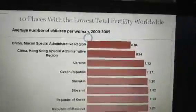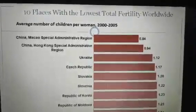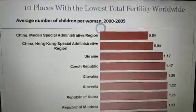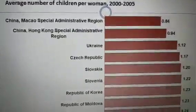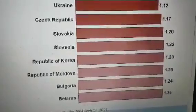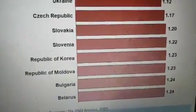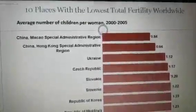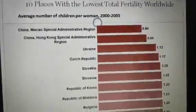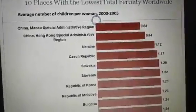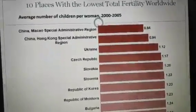There are 10 places with the lowest total fertility worldwide, even below replacement level — figures from 2005. China's Macau specialization region: 0.84; Hong Kong: 0.94; Ukraine: 1.12; Czech Republic: 1.17; Slovakia: 1.20; Slovenia: 1.22; Republic of Korea: 1.23; Moldova: 1.23; Bulgaria: 1.24; and Belarus: 1.24. All these countries have reached or gone below replacement level and are now witnessing low economic demand due to low population. This is a new challenge, and it is why a fifth stage emerges in the demographic transition model.